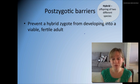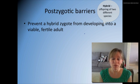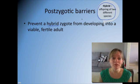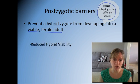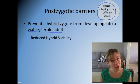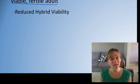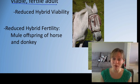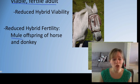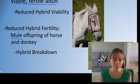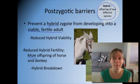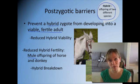Postzygotic barriers prevent the hybrid — offspring of two different species — from developing into a viable, fertile adult. There are three types. Reduced hybrid viability: the hybrid offspring won't live very long, it won't become an adult. Reduced hybrid fertility: the hybrid becomes an adult but can't produce offspring of its own — a classic example is the mule, offspring of a horse and a donkey, which cannot produce fertile offspring. Hybrid breakdown: the hybrid may have offspring, but those offspring won't be fertile or viable for long.